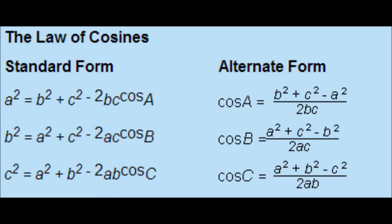Now we're going to move on to the law of cosines. The law of cosines has a standard form and an alternate form. The standard form is used to find the value of the sides, and the alternate form is used to find the value of the angles.